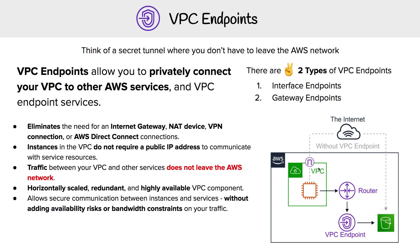Wouldn't it be more convenient if we could just keep the traffic within the AWS network? That is the purpose of a VPC endpoint — it helps you keep traffic within the AWS network. Because it does not leave the AWS network, we do not require a public IP address to communicate with these services, which eliminates the need for an internet gateway.